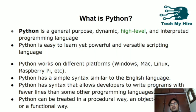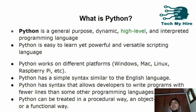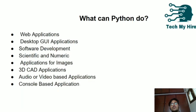Python can be treated in both a procedural way as well as an object-oriented way. We can write functions and execute the program in a procedural way, as well as write classes and objects and execute the program in an object-oriented way. So Python is called both a functional and object-oriented programming language.